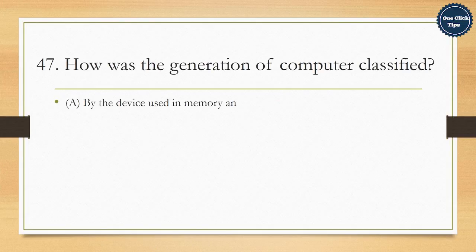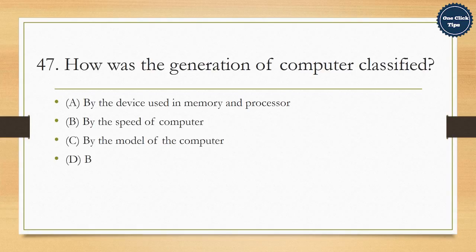47. How was the generation of computer classified? A. By the device used in memory and processor, B. By the speed of computer, C. By the model of the computer, D. By the accuracy of computer. The correct answer is A. By the device used in memory and processor.